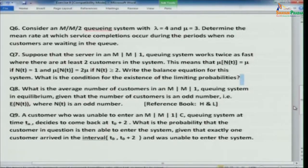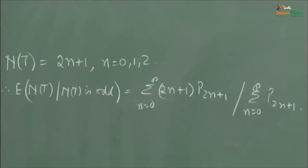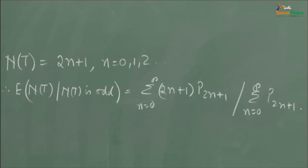Problem 8: What is the average number of customers in an MM1 queuing system in equilibrium, given that the number of customers is an odd number? You need to find E[n(t) | n(t) is odd]. Setting n(t) = 2n+1 as n varies from 0 to infinity, the conditional expectation is the sum of (2n+1) times P(2n+1) for n from 0 to infinity, divided by the sum of P(2n+1) — the probability of an odd number of customers.